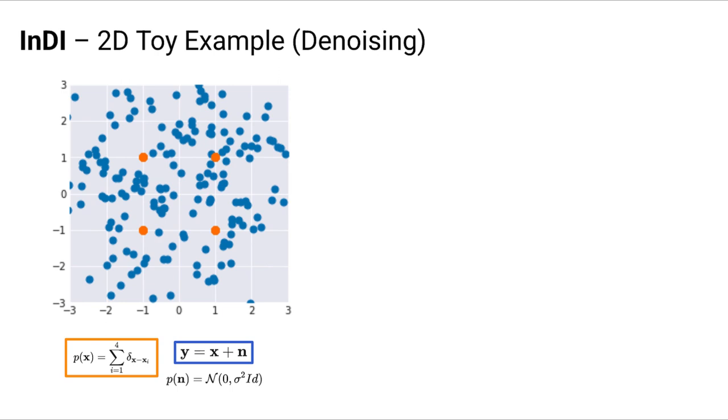To fix ideas, let us introduce a toy example. Imagine we have 2D noisy points coming from a multimodal distribution, here represented by the four orange dots. The noise is assumed to be Gaussian of a known standard deviation. The idea is then to recover the clean samples. In these examples, we know all the components perfectly, so we can compute the exact posterior mean needed for the INDI iteration.